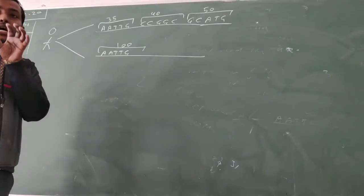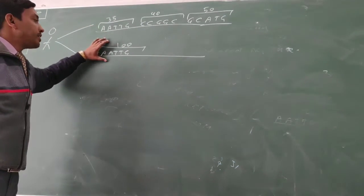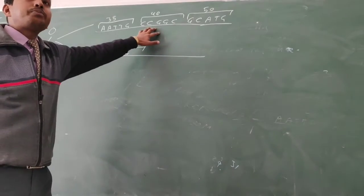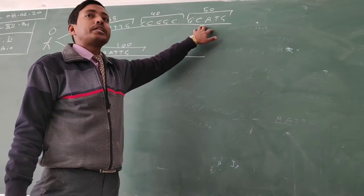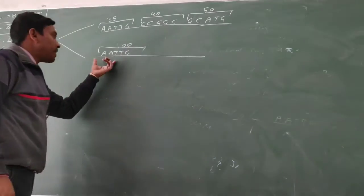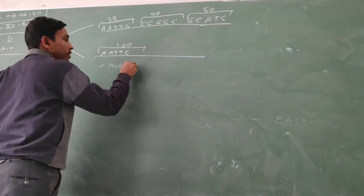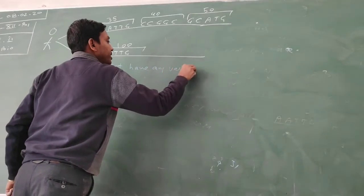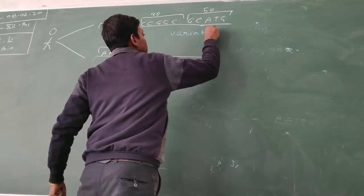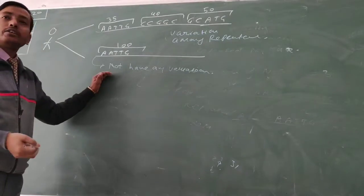So which strand is chosen as a prior for DNA fingerprinting? That is the first strand. The first strand has 35 times repeated sequence while the second strand has 100 times repeated sequence. In the first strand, the second group of nitrogenous bases repeats 40 times, and the third group repeats 50 times. But the second strand consists of only one type of nitrogenous base throughout its entire genome, meaning it has no variation. The first strand has variation among its repeated sequences, but the second strand does not.